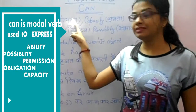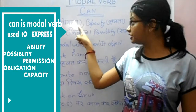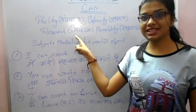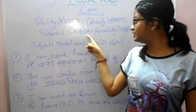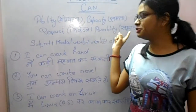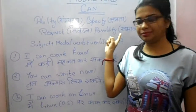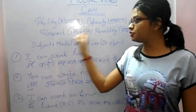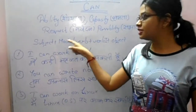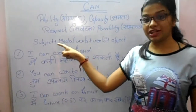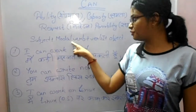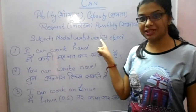Today we will be studying modal verb 'can'. 'Can' is used when we have ability (yogyata), capacity (shamta), request (nivedan), and possibility (sambhavna). Let's see the structure of the sentence.